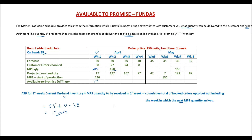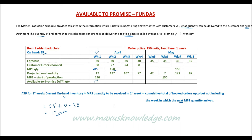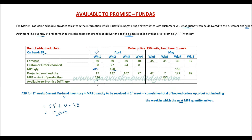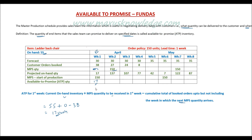A couple of important points: the master production schedule uses the larger of forecast or customer orders booked to stay on the safe side. However, for ATP we use actual customer orders booked, because whatever is left over still needs to be booked with new orders. So in ATP calculations we use customer orders booked. In other words, if a customer calls today asking how many units can be made available this week, the sales team should commit a quantity of 17.